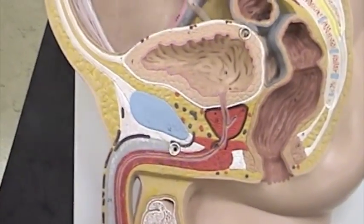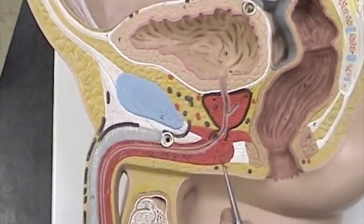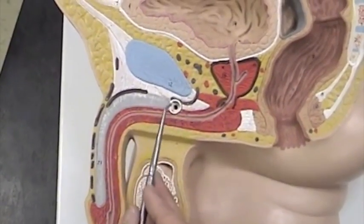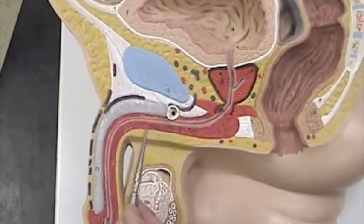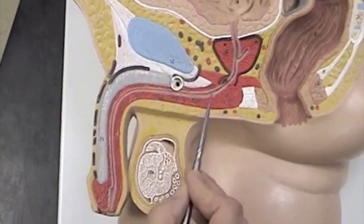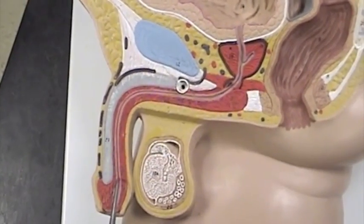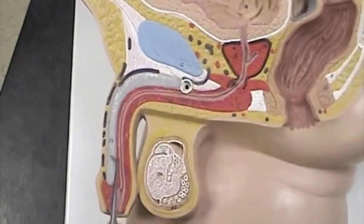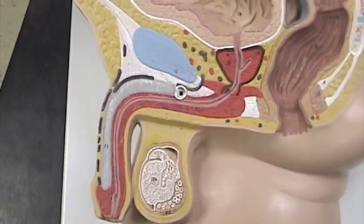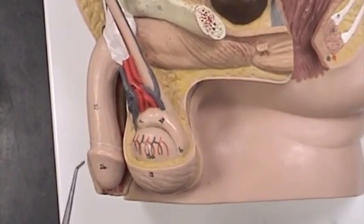Now we'll remove that and look at some of these structures in here. Here is the prostate gland, and from here on out is the penis. This red representation here is the corpus spongiosum, which is the one that surrounds the penile urethra. This represents the corpus cavernosum right here. This dilated area at the tip of the penis is the glans penis.